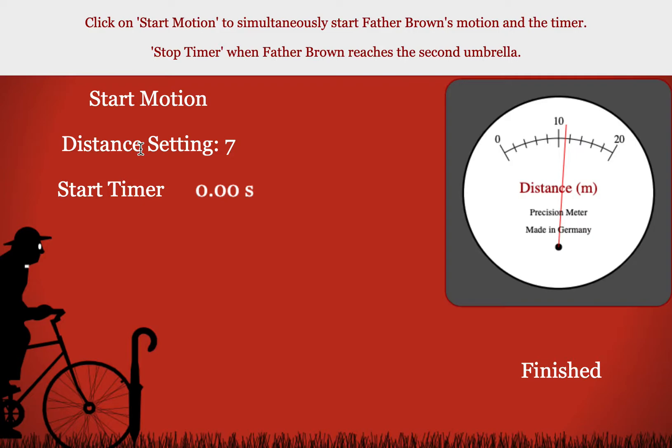And again, each time you set this to a new setting, it will move the second umbrella farther back. Here, we're a little more than 11 meters. This is 10. This would be 12. So right in the middle would be 11. So this might be like 11.2.